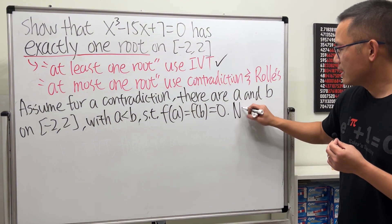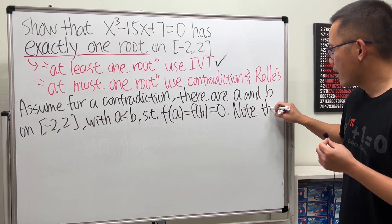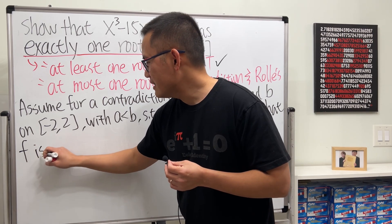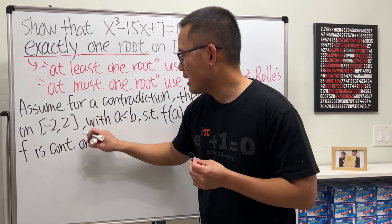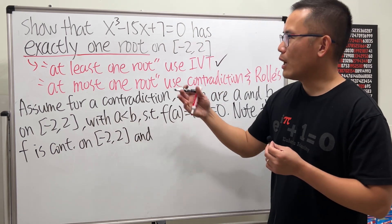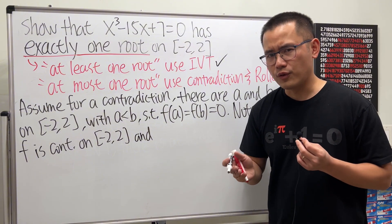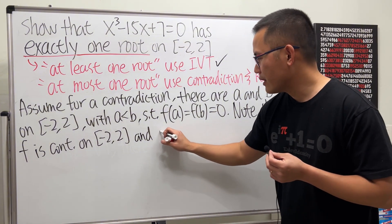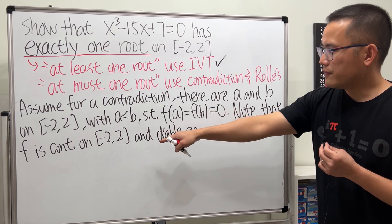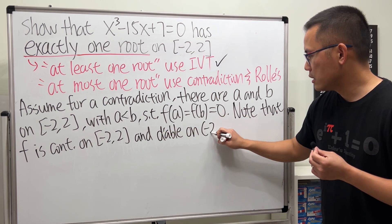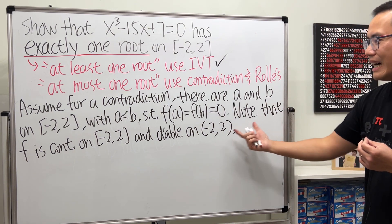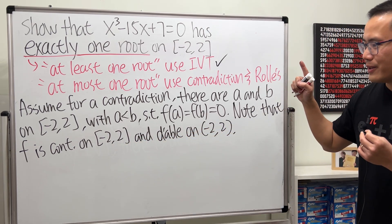Note that, even though we mentioned it earlier, let's mention it again: f is continuous on our interval negative 2 to 2. And because our function f is a cubic function, so it's of course also differentiable, but if it's differentiable we just need to mention the interval without the endpoints. So in order for us to use this, we must have this statement in our proof.